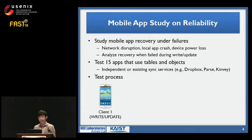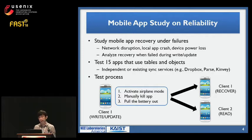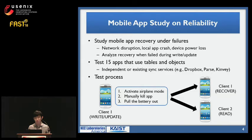Here is how we ran the test. We have the first client write or update tabular or object data. Then, to simulate network disruption, we activated airplane mode. For crash simulation, we either manually killed the app or pulled the battery out. Then we observed the recovery result at client one, as well as what the second client sees if client one synced after recovery.